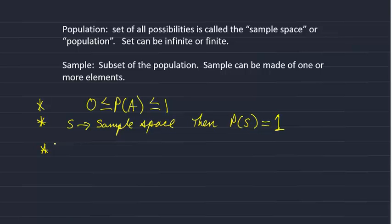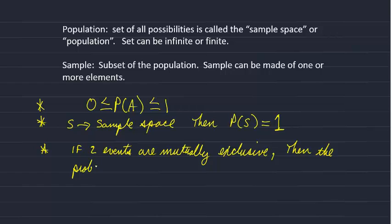Another point: if two events are mutually exclusive, that means only one can occur at a time. They can't both occur at the same time.